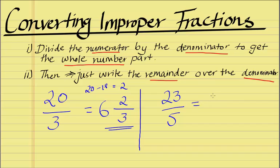What we get is 4. It can go in 4 times. So this gives us our whole number part. 4 times 5 is 20. So, 23 minus 20, what we get is 3.